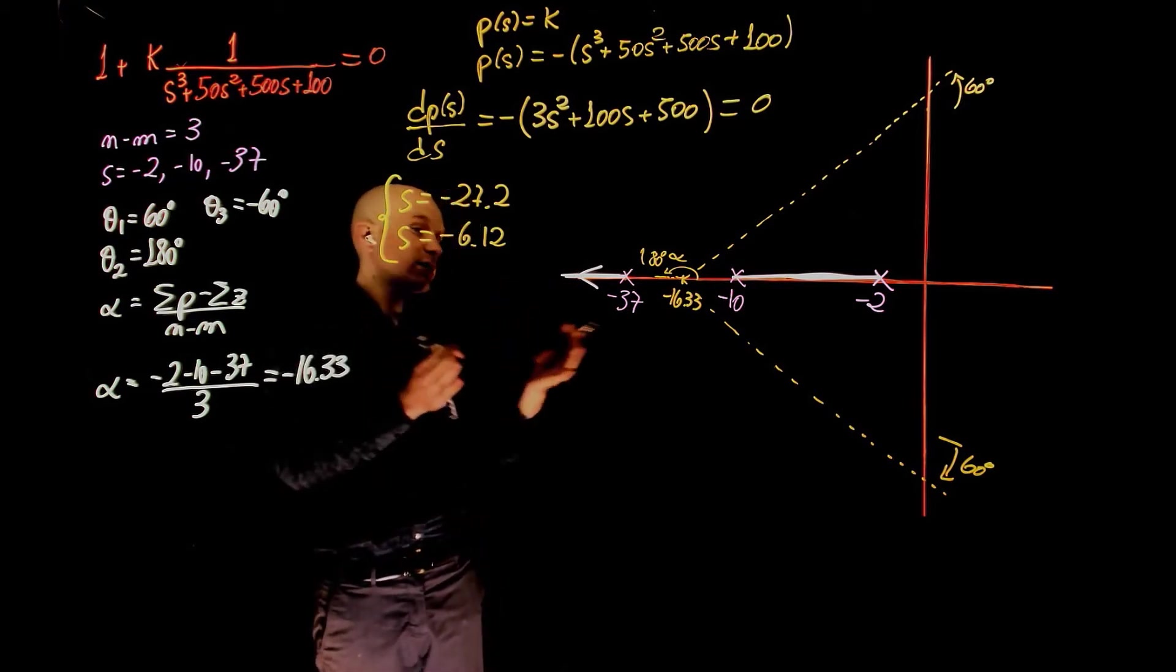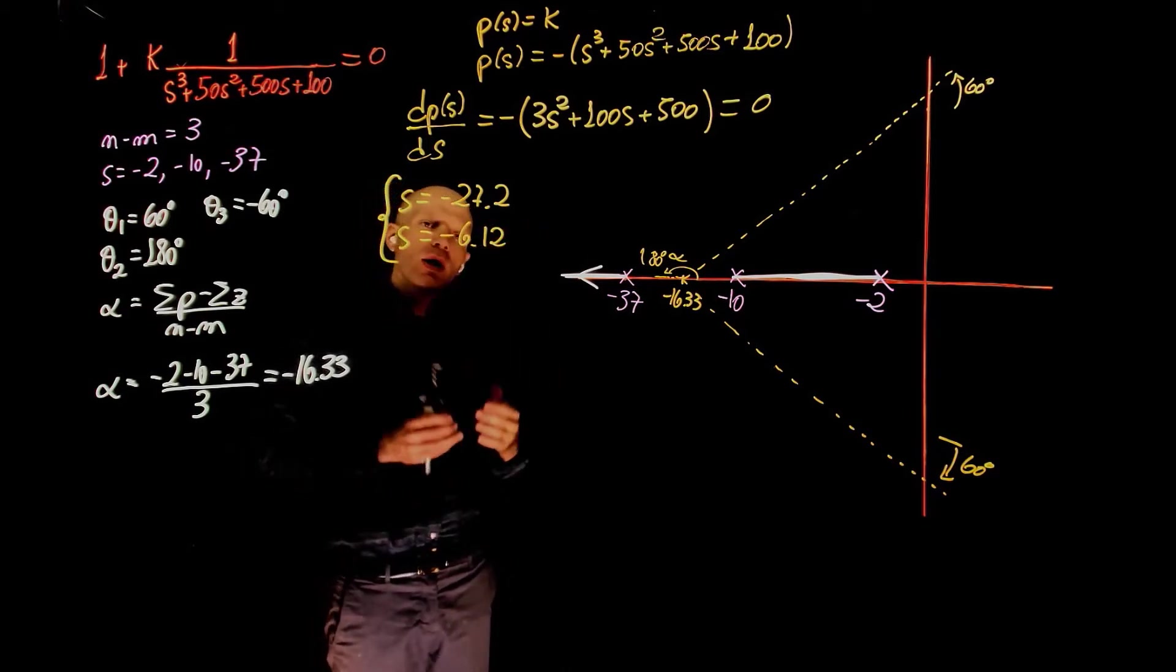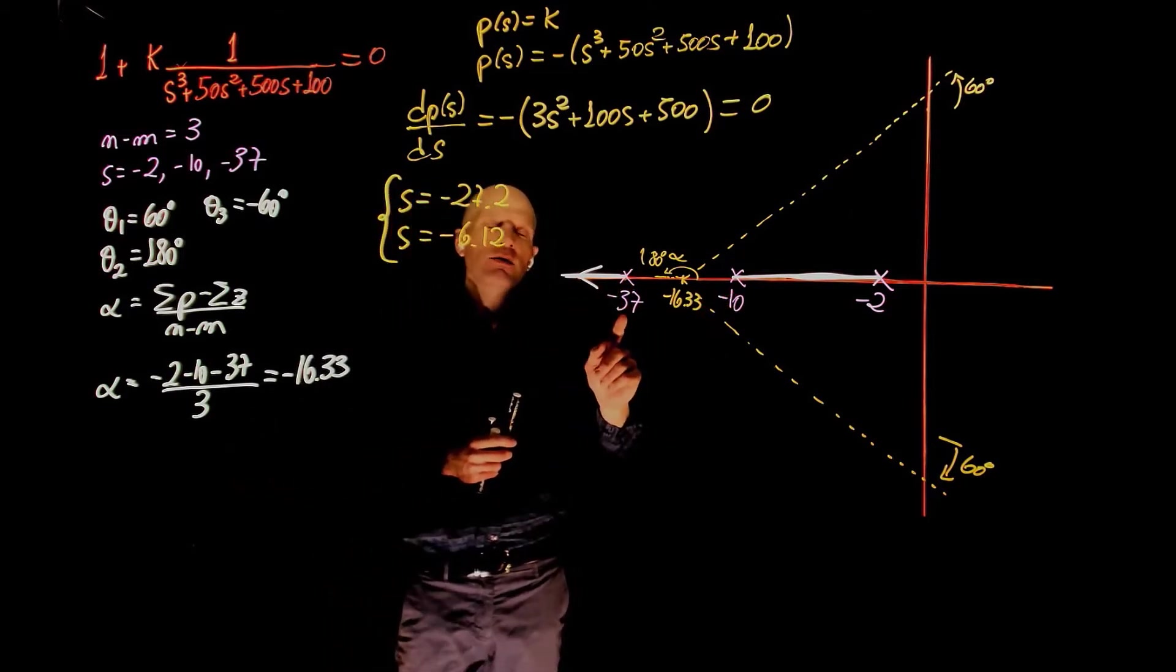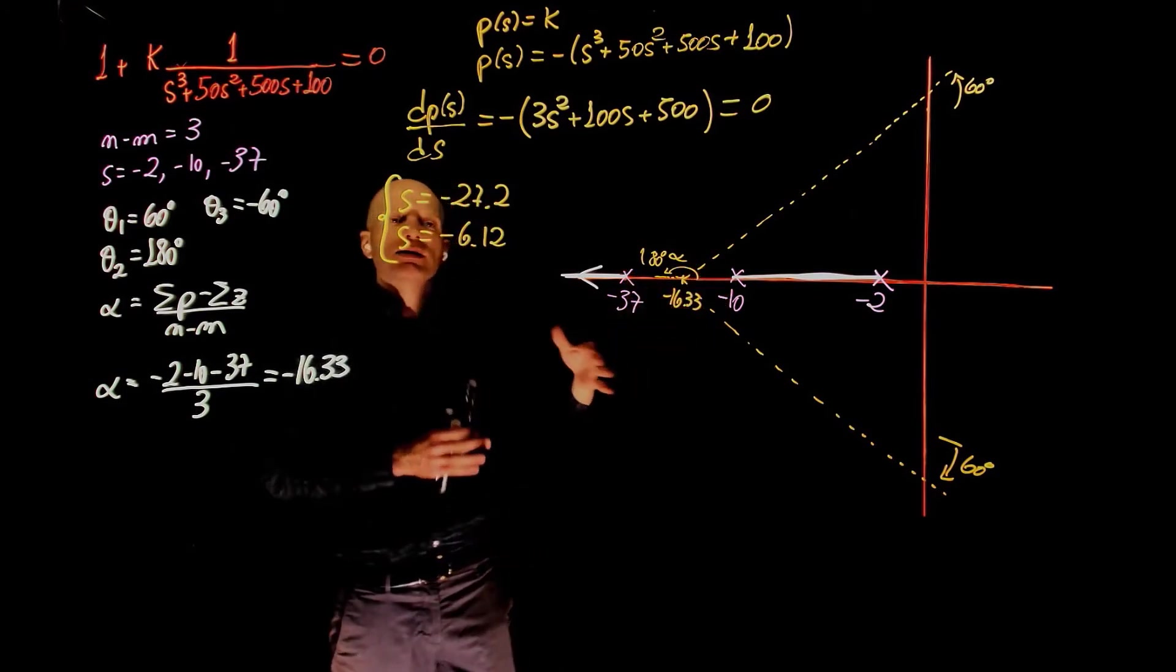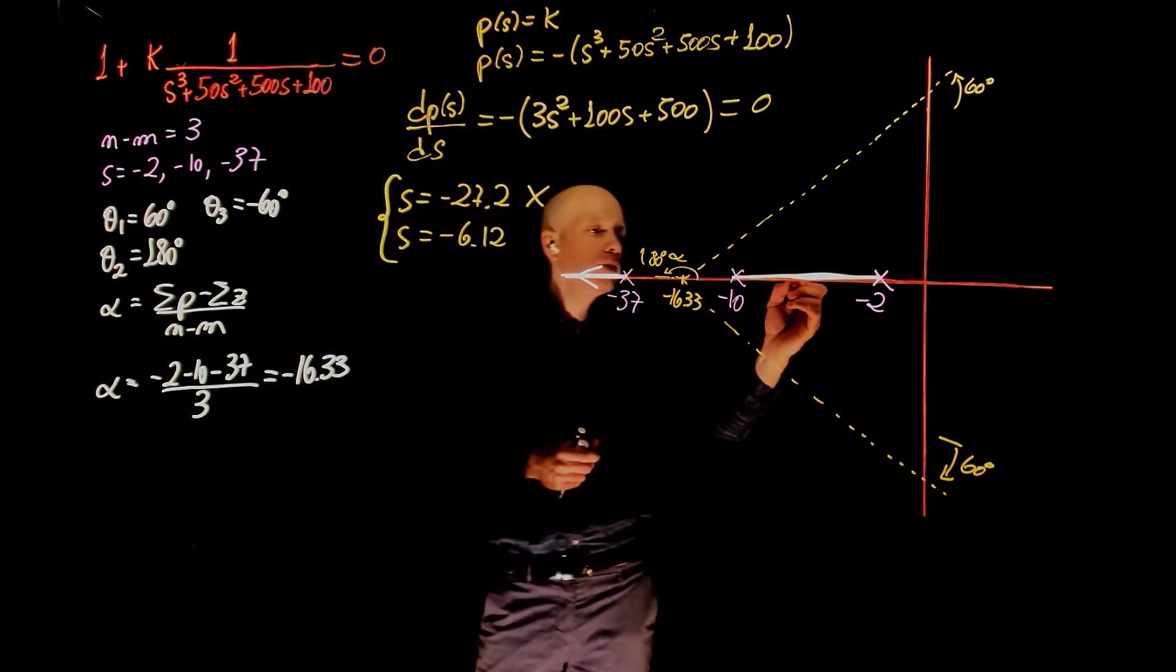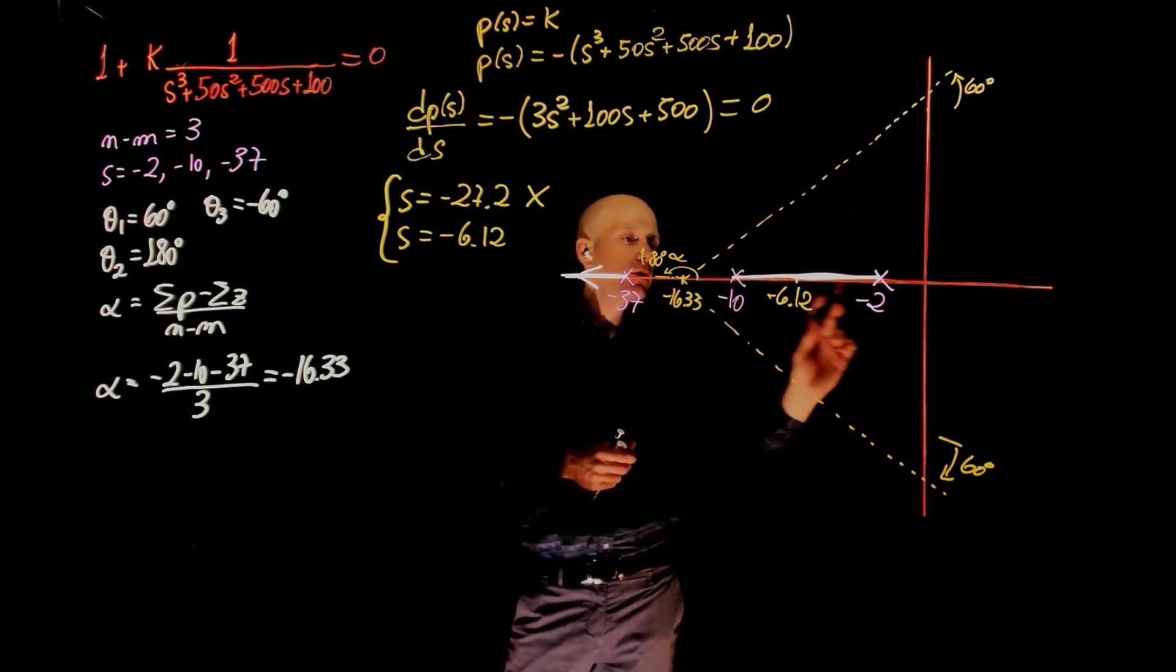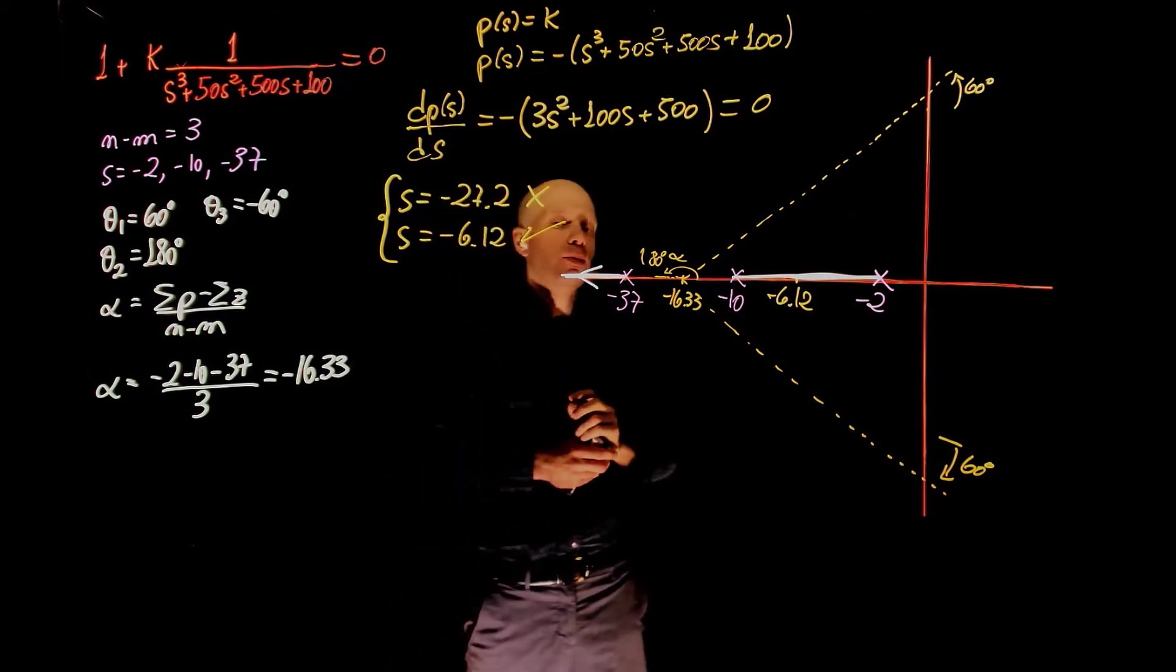Now that we have them, let's see if they are part of the root locus. Starting with the first solution here, negative 27.2. Is that part of the root locus? No. That point is between negative 10 and negative 37. And this segment here, this part of the real axis, has no root locus. So this is not a breakaway nor a breaking point, because it's not on the root locus. Is negative 6.12 part of the root locus? Yes, it's right here. And is part of this segment of the root locus between negative 10 and negative 2. So this is the breakaway point.